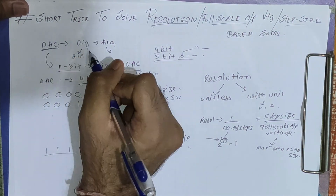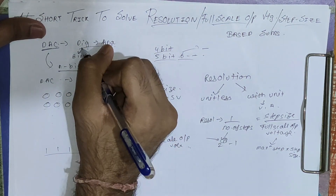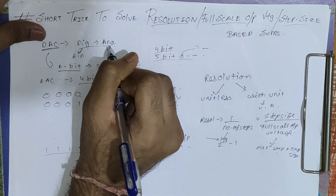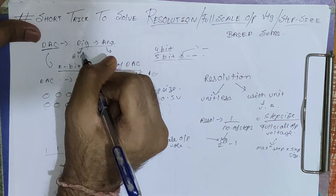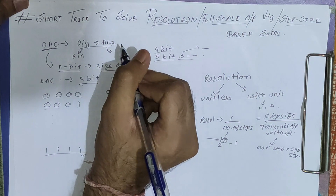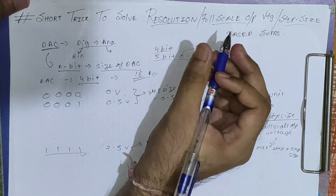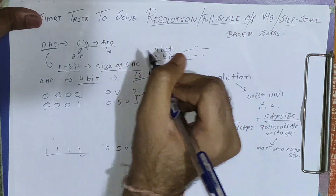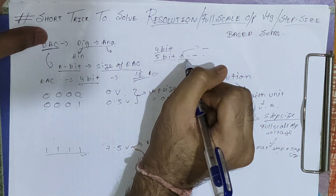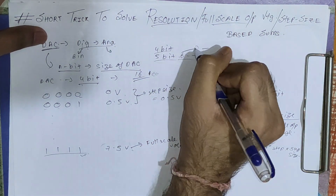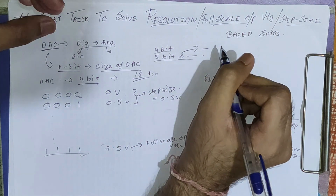So basically DAC is a digital to analog converter. The input will be digital and the output will be analog. So input can be in binary form and output will be in the form of sinusoidal — basically it can be current or voltage. So DAC comes in 4-bit, 5-bit, 6-bit variants. What does it signify? It signifies the size of the DAC.